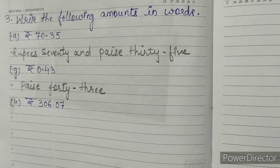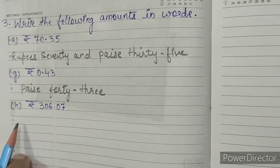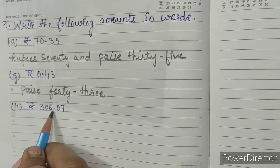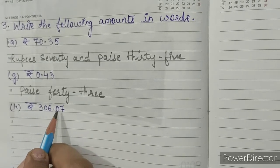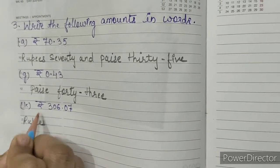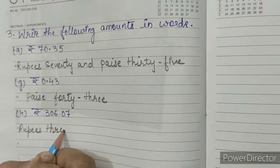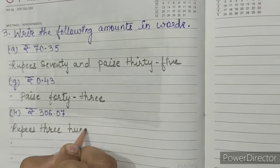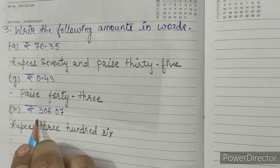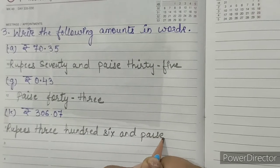K. Rupees 306.07 paise. Now we'll read it as rupees 306 and 0.7 paise. P. Rupees 306, 0.7 paise.